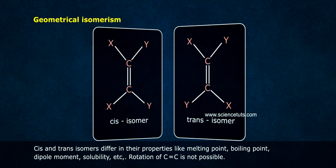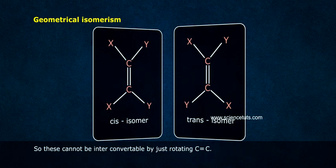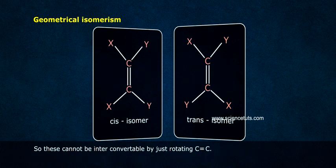Cis and trans isomers differ in their properties like melting point, boiling point, dipole moment, solubility, etc. Rotation of C=C is not possible, so these cannot be interconvertible by just rotating C=C.